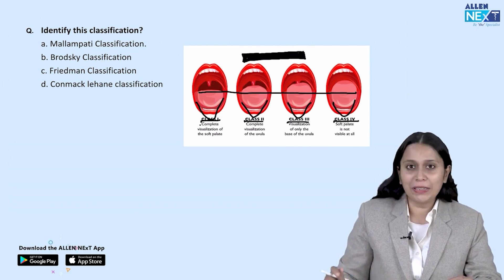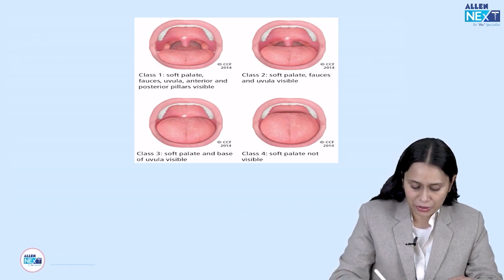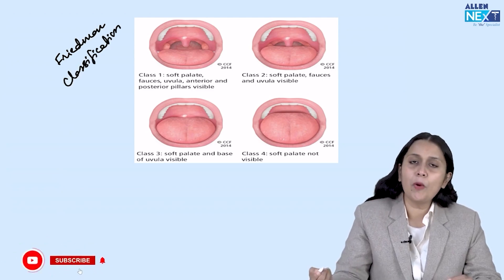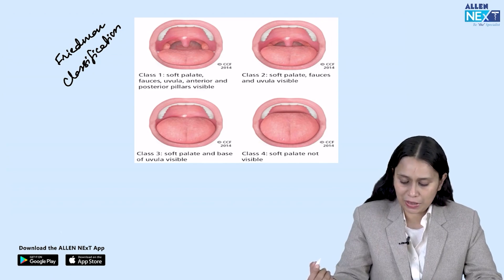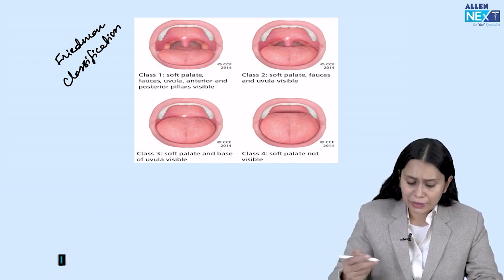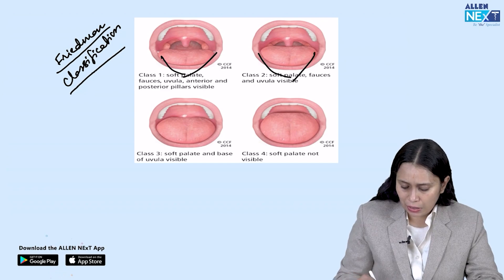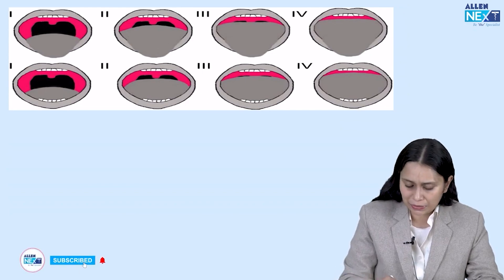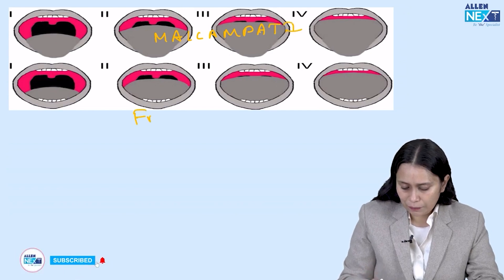If the tongue is inside, it would become the third option — Friedman classification. This is Friedman classification. Where do we do Friedman classification? We do it in obstructive sleep apnea, to grade whether the patient would have obstructive sleep apnea or not. The only difference in Friedman classification is the tongue is not protruded outward. If you compare the images: the above one is Malampati — class 1, 2, 3, 4 — the tongue is out. The lower one is Friedman classification.